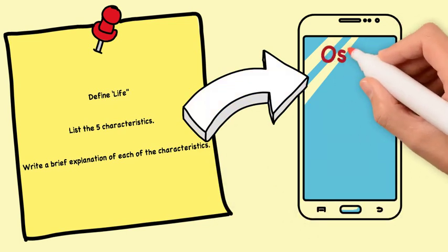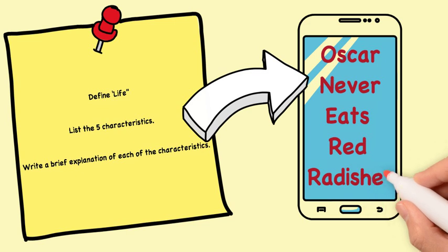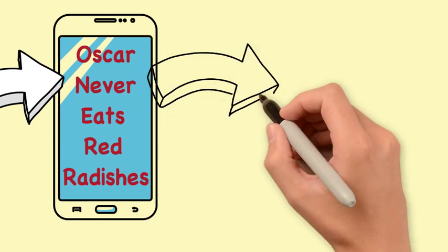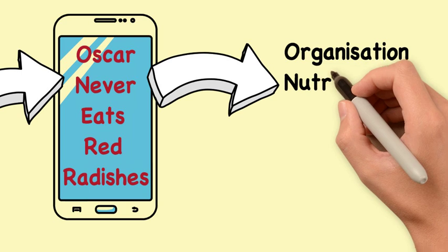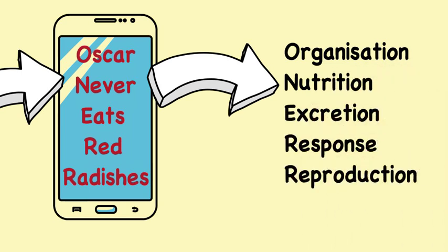In our class, to help us remember them, we use the rhyme Oscar never eats red radishes. So that's just one way of making things simple for yourselves, making up rhymes. So we have organisation, we have nutrition, we have excretion, we have response, and then we have reproduction.